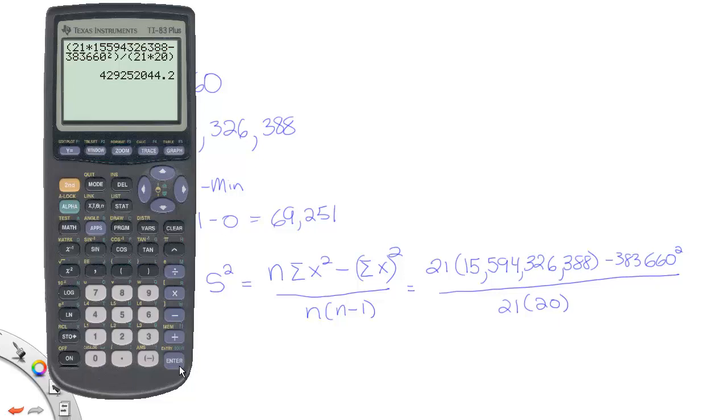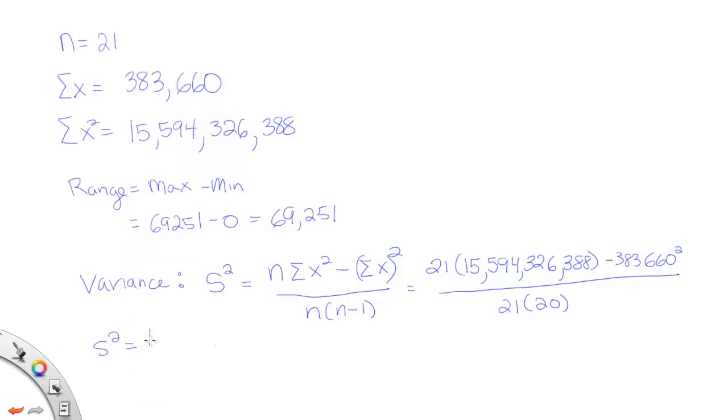And the answer is a pretty large number. So we're going to write that down, and that's going to be our variance. So 429,252,044.2. So we have 429,252,044.2. Alright, so that's your variance.